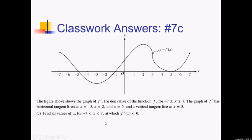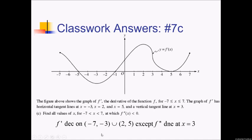On this problem, we want to find everywhere between negative and positive seven where f double prime is less than zero. To know where the derivative of f prime is less than zero, I just need to know where f prime is decreasing. That happens on the interval from negative seven to negative three, and also on the interval from two to five — except we have that vertical tangent at x equals three. At that spot, we can't say f prime is decreasing because the slope is undefined — perfectly vertical for just that one spot. So f double prime does not exist at x equals three. Therefore, f double prime is less than zero on the interval from negative seven to negative three, union the interval from two to three, union the interval from three to five.